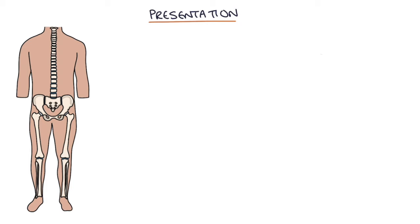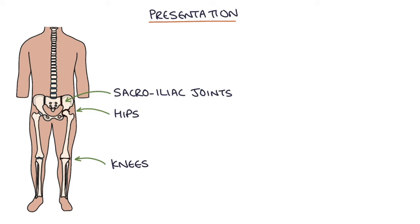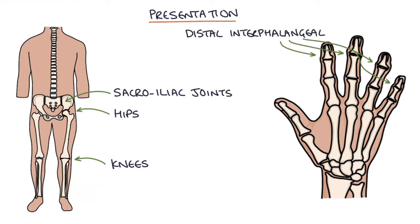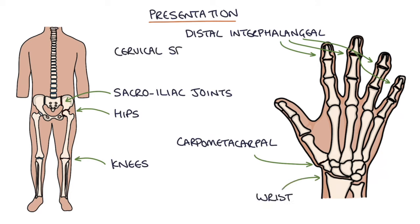Which joints are commonly affected? The knees and hips are key joints that often get affected with osteoarthritis. It can also affect the sacroiliac joints where the spinal column meets the pelvis. It typically affects the distal interphalangeal joints of the hands — the DIPs — at the ends of the fingers, the carpometacarpal joint at the base of the thumb (the CMC joint), the wrist, and the cervical spine, which we often call cervical spondylosis.